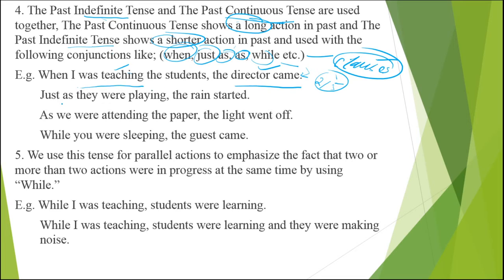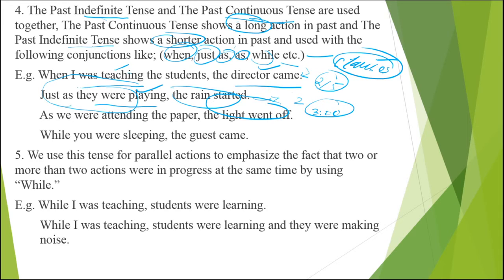Using the conjunction 'just as': 'Just as they were playing, the rain started.' They were playing maybe one inning had gone and the second was about to start, but the rain started. The starting of rain was a short moment that stopped the playing. Similarly: 'As we were attending the paper, the light went off.' You have a three-hour paper and may have continued for one and a half or two hours, but the light went off — that moment was very short, maybe one or two seconds, which interrupted everything. That is known as long action and short action.